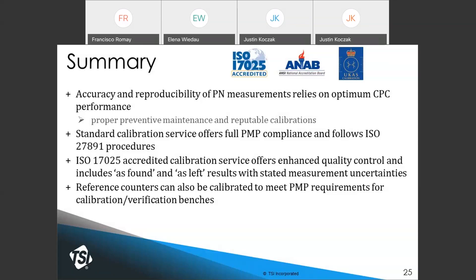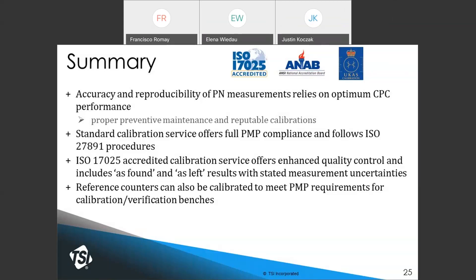Regarding using the 3750 as a reference to calibrate the 3790-10: the 3750 has a cut point of 7 nanometers, and its counting efficiency at 10 nanometers is probably not high enough. At TSI, when calibrating 10-nanometer EECPCs, an electrometer is used as the reference — not the 3750. The 3750 equivalent is used for 23-nanometer calibrations but not for 10-nanometer ones.